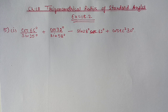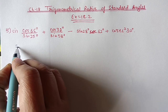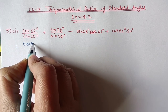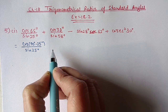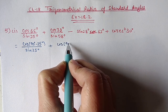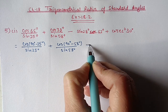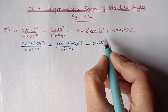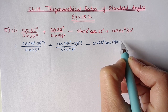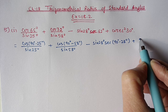Minus sin28·sec62 plus cosec²30°. From numerator and denominator, any one we have to change with the help of the complementary angle property. So cos65 we can write as cos(90−25) upon sin25. Here also cos32 we can write as cos(90−58) upon sin58. These two are in multiplication, so from these two also any one we have to change: sin28 I am keeping as it is, sec62 I can write as sec(90−28). This is a standard angle; its value we can substitute — cos30 equals 2.